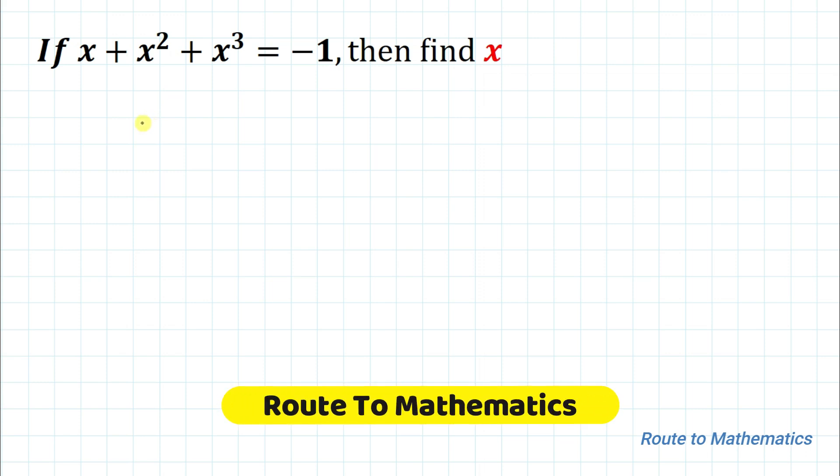Hello everyone, welcome to Root to Mathematics. In this video we're going to solve this interesting algebraic question. The given question is: if x + x² + x³ = -1, then find x. Here we are asked to find the value of x from this third-degree equation. So without any delay, let's start the solution.